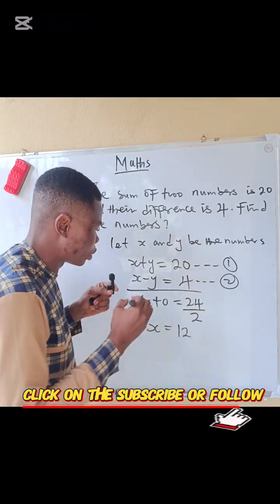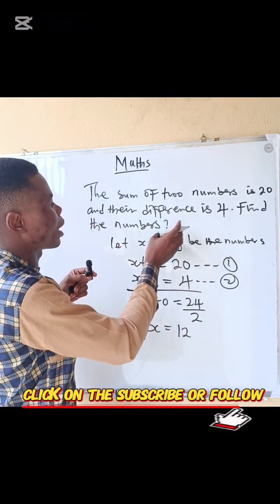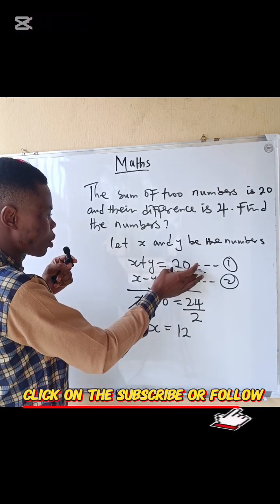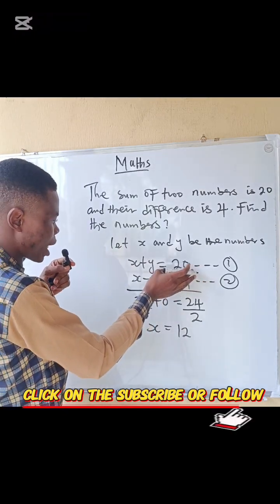Remember, we are asked to find the two numbers. So to get the second number, you can use equation one. I can make y the subject, so y equals 20 minus x.